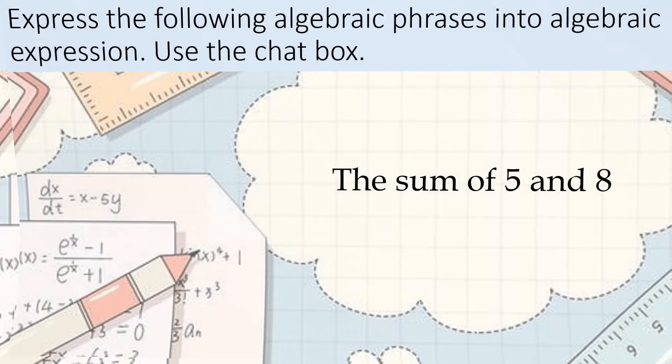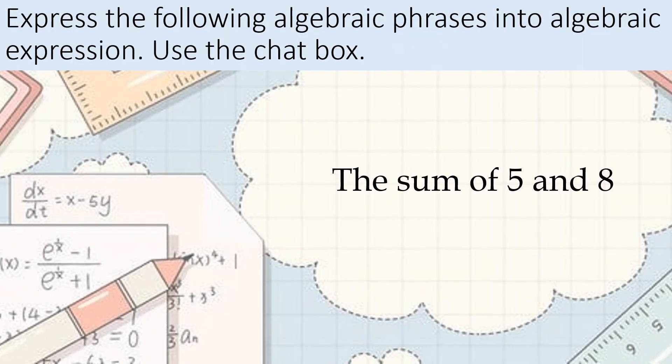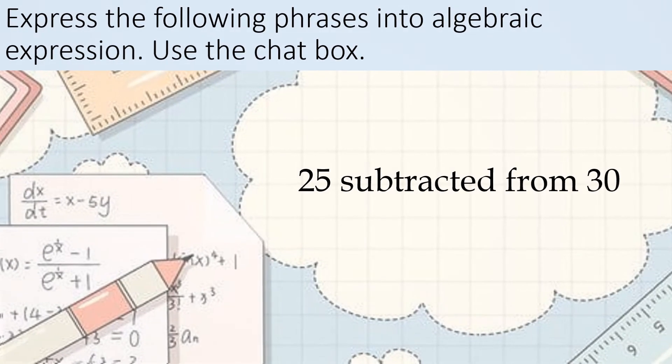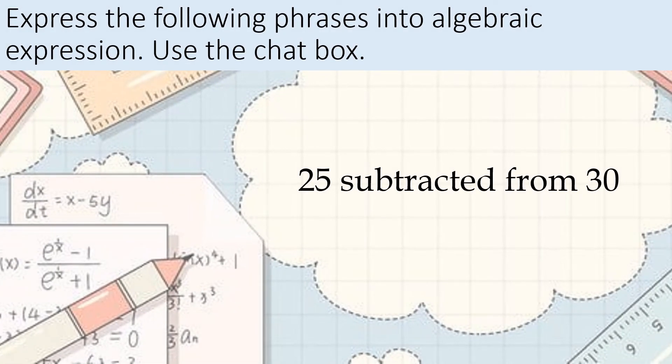The sum of 5 and 8. Sum, of course, that is addition. 5 plus 8. That's it. Next. 25 subtracted from 30. So that means 30 minus 25.